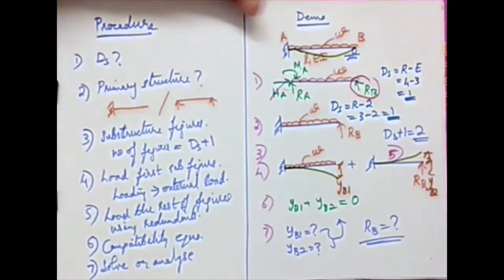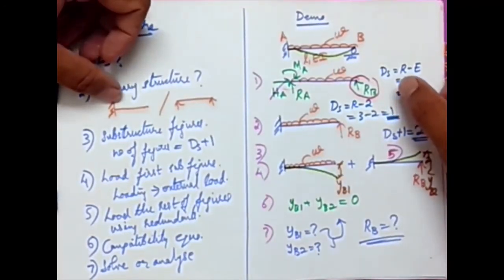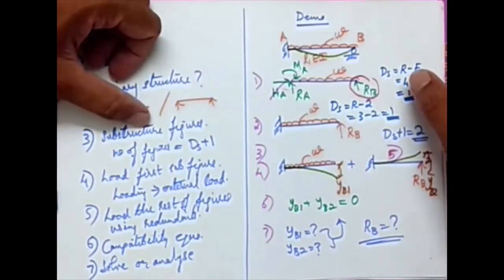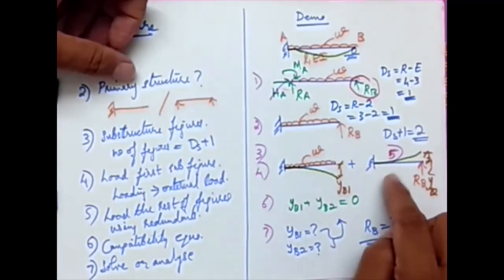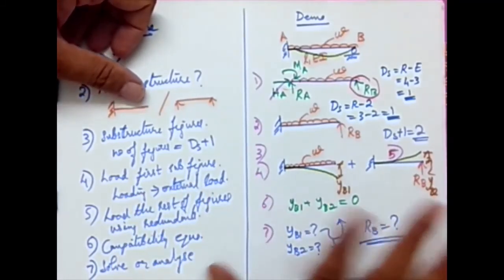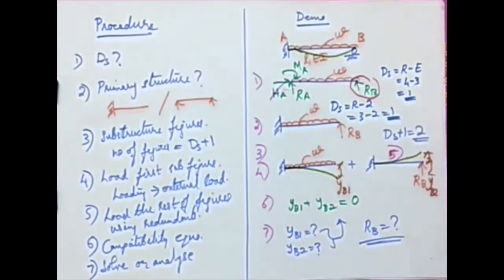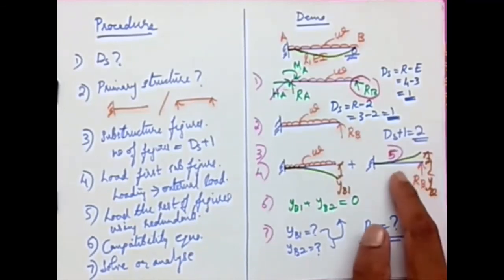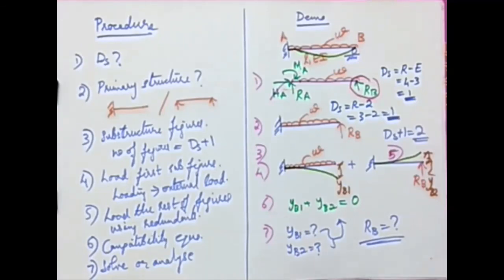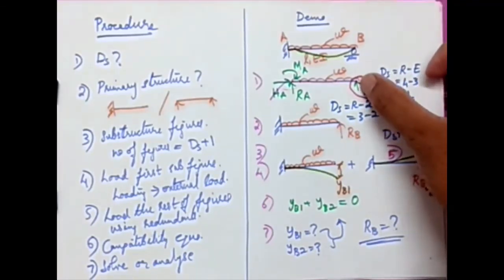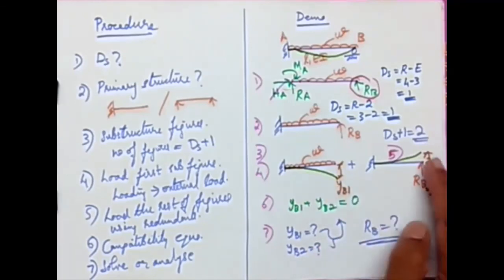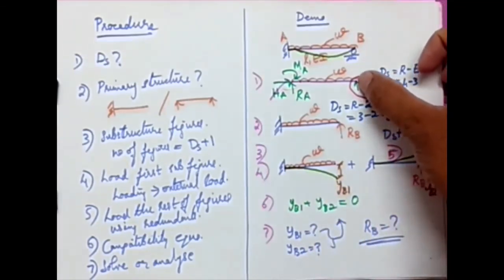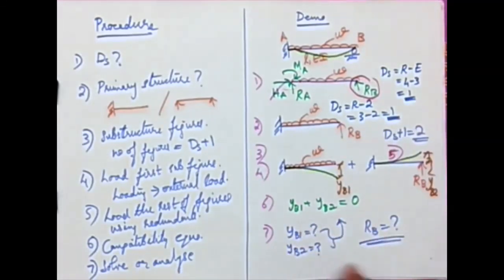In summary, the consistent deformation method procedure is: first, determine the DS value (degree of static indeterminacy); second, choose the primary structure — cantilever or simply supported; third, construct DS+1 sub-figures; fourth, load the first figure with the external load; fifth, load subsequent figures with one redundant each; sixth, write the compatibility equation based on the chosen redundant (vertical displacement for a reaction, rotation for a moment) — YB1 + YB2 = 0; and seventh, solve for the redundant.